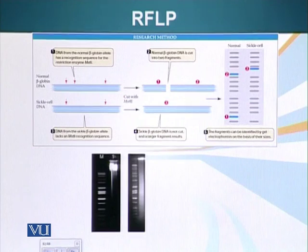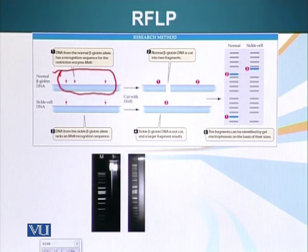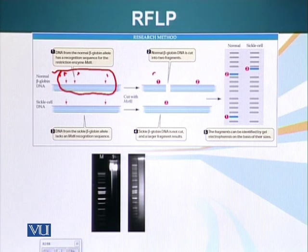Now imagine there is a disease — for example, sickle cell anemia. Normal DNA has three restriction sites for a particular enzyme, MST2. This restriction endonuclease can cut the normal globin gene three times — once here, once here, and once here — and two fragments are generated from this gene: fragment number one and fragment number two. Now say there is a mutation that has removed this particular restriction site.